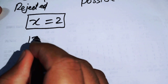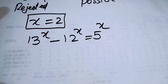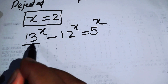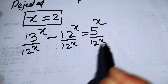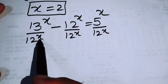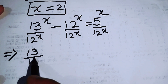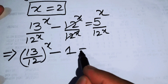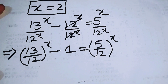We rewrite the given equation as 13 to the power of x minus 12 to the power of x equals 5 to the power of x. Now I will divide both sides by 12 to the power of x. Since the bases are different but the exponents are the same, we can combine them and write this as (13/12) to the power of x minus 1, equals (5/12) to the power of x.